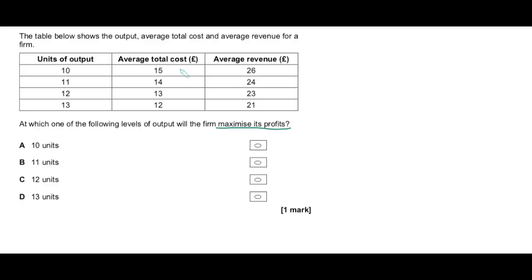Average total cost is the cost per unit, average revenue is the revenue per unit — so what we have are unit profits. Work out unit profits as the difference between average revenue and average cost, then multiply by total units of output. For 10 units: ATC is 15, AR is 26 — that's 11 pounds profit per unit times 10 gives £110. For 11 units: unit profit is 10, times 11 gives £110. For 12 units: unit profit is 10, times 12 gives £120. For 13 units: unit profit is 9, times 13 gives £117. Profits are maximized at £120 — at 12 units of output.